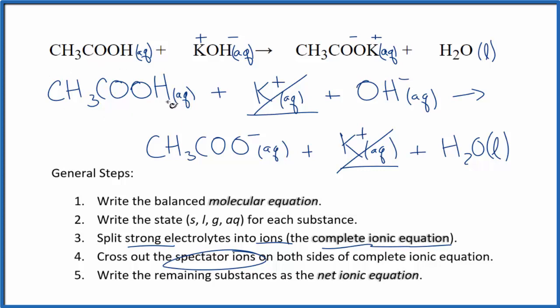This CH3COOH, this acetic acid, is very different from the acetate ion. The hydroxide, that's different from water. So we have now the net ionic equation. Let's clean it up, get rid of the spectator ions, see what that looks like.